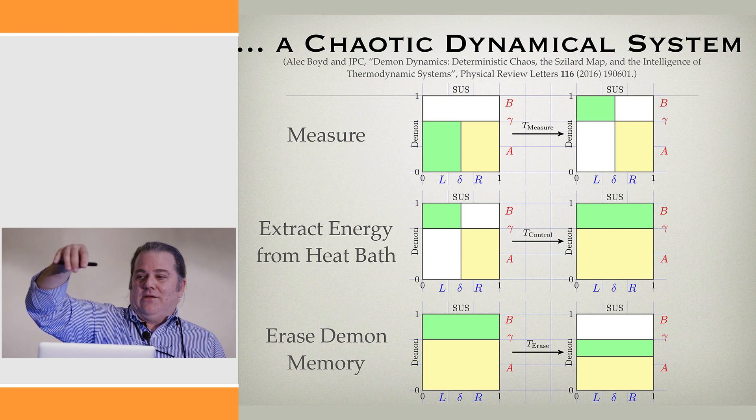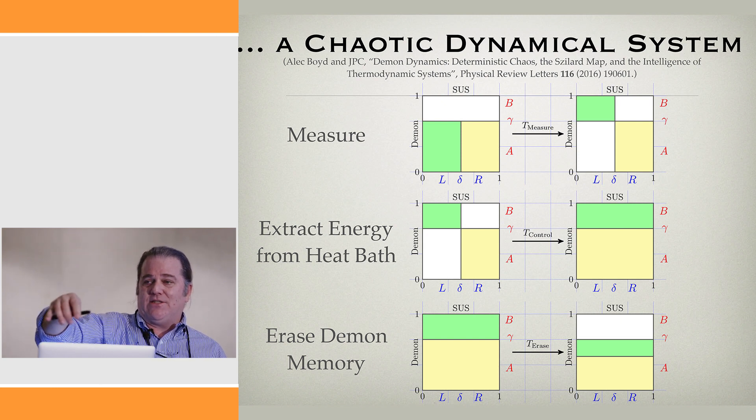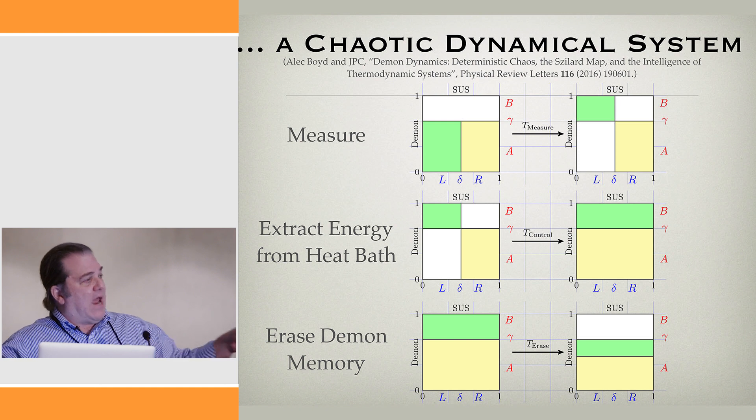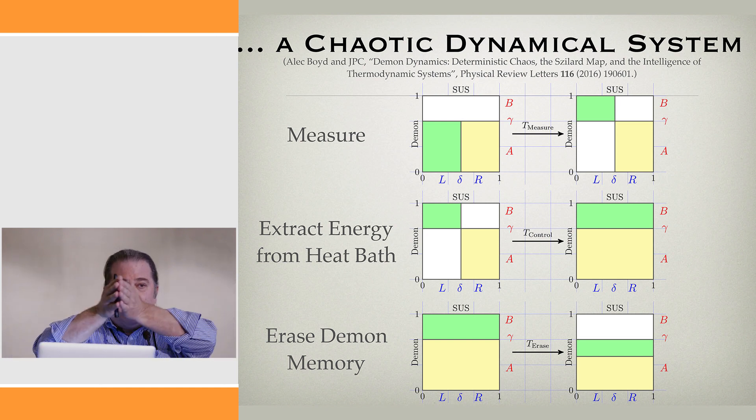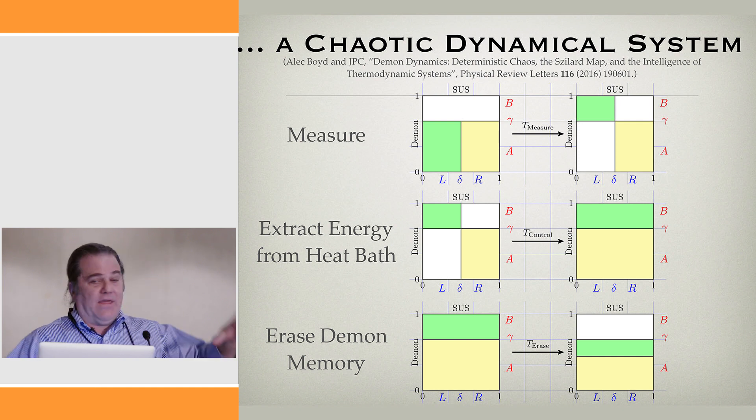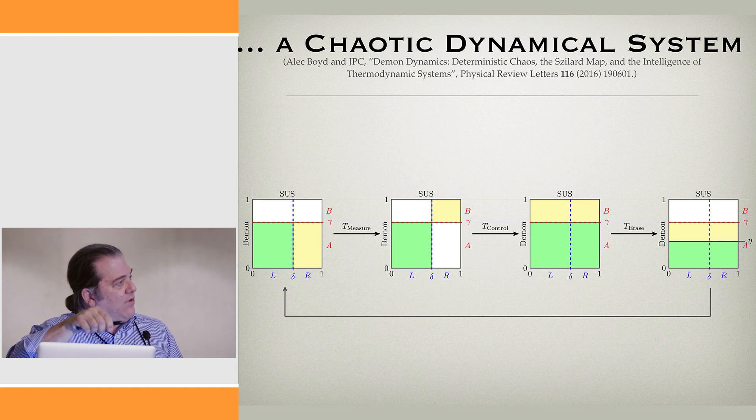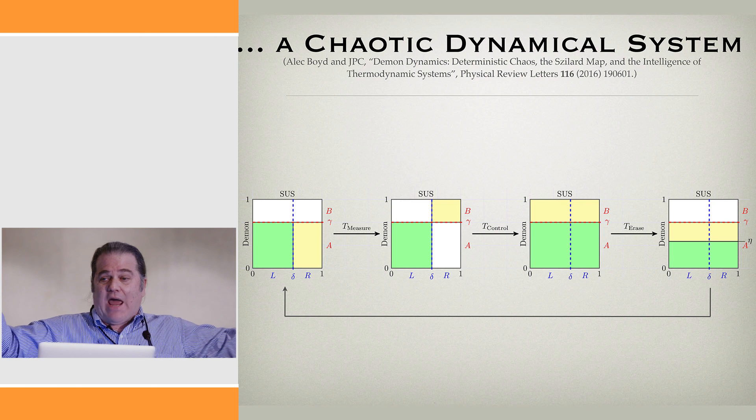What we do is we symmetrize the system under study—the single molecule thermodynamic system—and the demon. The molecule can be either left or right, and the demon's memory can be either A or B. What does measurement correspond to? A correlation between the demon memory macrostates and positional macrostates. So that's measurement—they come into alignment. Extracting the energy: the demon just allows the partition to move, so this joint distribution is allowed to expand. Then you have to reset to start the cycle over. Probably the best way to show this is—this is a cycle. This is the thermodynamic engine. It has three steps in it: you measure, the demon and thermodynamic system get correlated, you expand to extract energy from the heat bath, and then you reset.